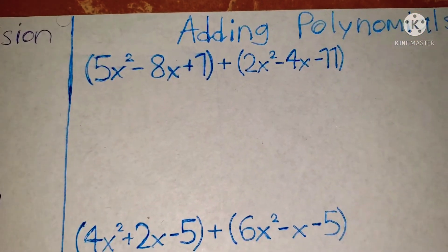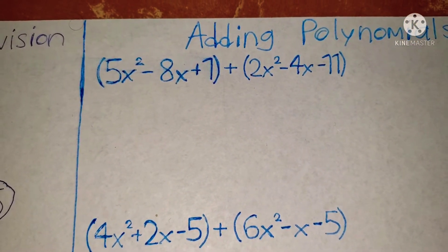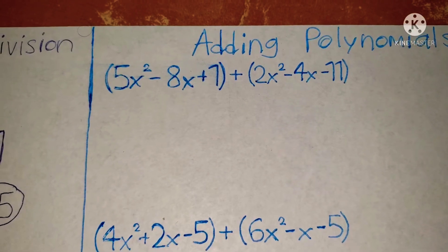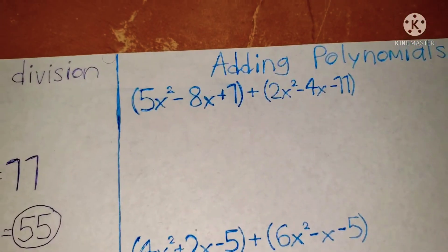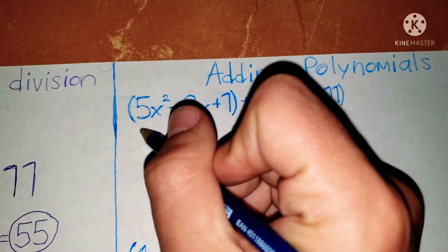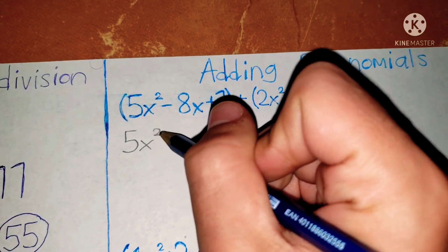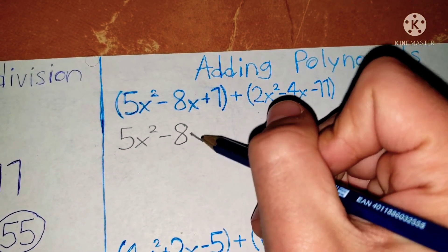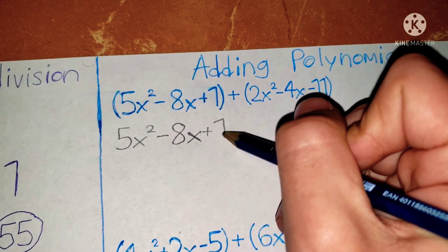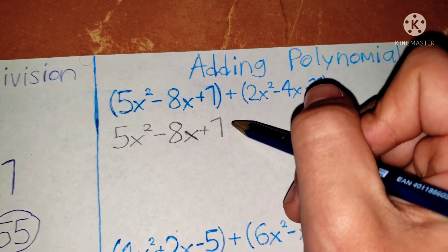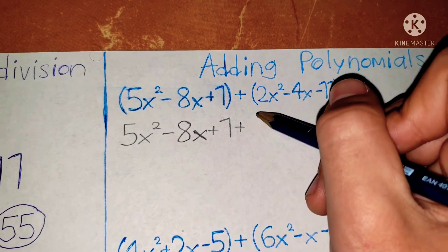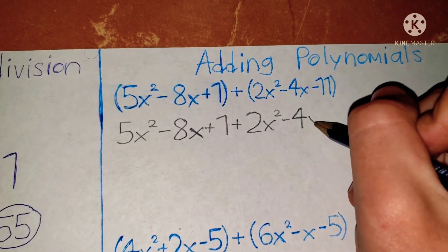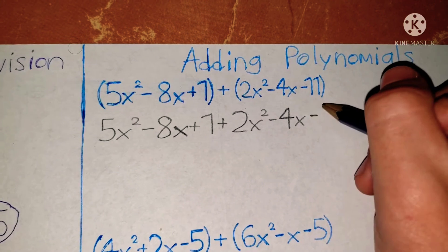Okay, so here we have 5x squared minus 8x plus 1, in parentheses, plus 2x squared minus 4x minus 11. What do you do here? All you have to do is just remove the parentheses. So everything stays the same — you don't have to change any numbers. You get 5x squared minus 8x plus 1, plus 2x squared minus 4x minus 11.